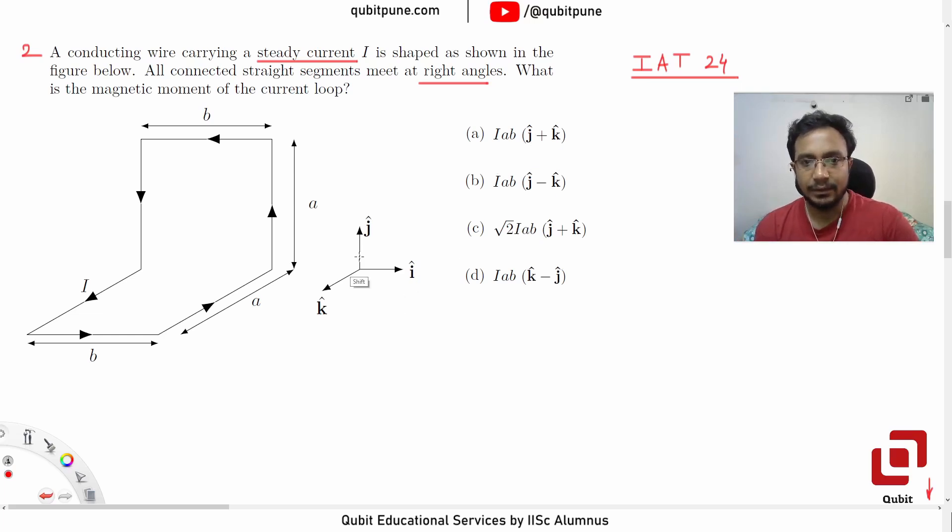They have already given you this coordinate system. So this is X axis, this is Y and this is Z.